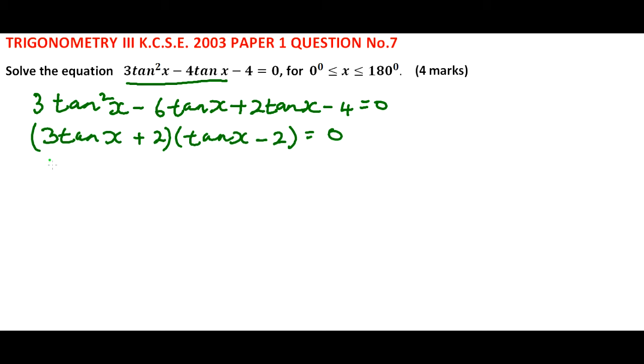Therefore, we get tan x = −2/3 or 2. So we find the angles whose tangent is −2/3 or 2.